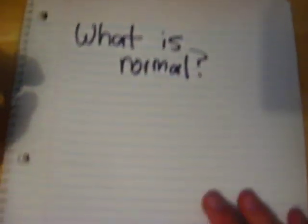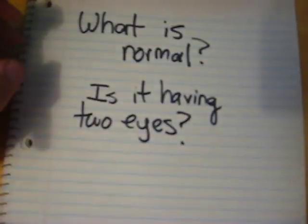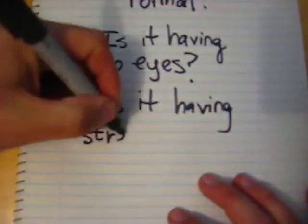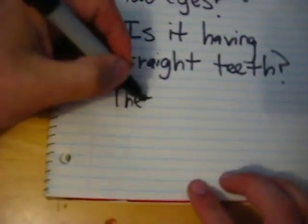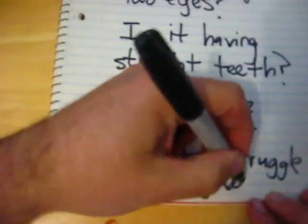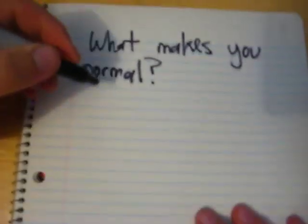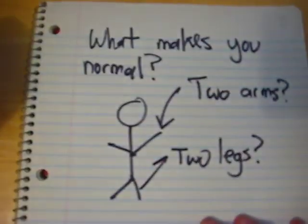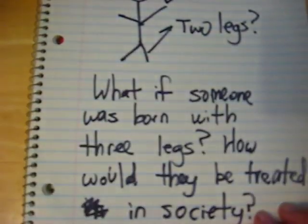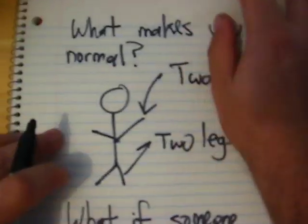What is normal? Is it having two eyes? Is it having straight teeth? These are the kinds of questions that scientists deal with every day, and it can be kind of a complicated question. What makes you normal — is it having two arms and two legs? What if someone was born with three legs? How would society treat them? These are the kinds of questions that scientists have to deal with on a regular basis.